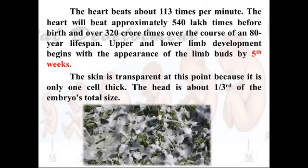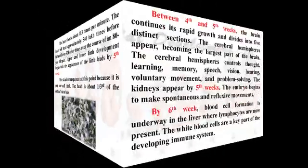Upper and lower limb development begins with the appearance of limb buds by the fifth week. The skin of the individual is very transparent because it is made up of only one cell, and the internal organs can be very easily seen. The facial developmental processes going on inside can be easily identified. At this stage, the head is about one third of the embryo's total size.